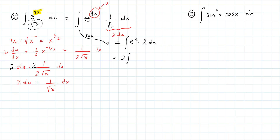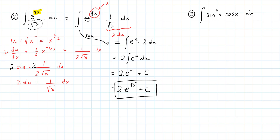Pulling the constant 2 out of the integral: 2 times the integral of e^u du. Now I have it all in terms of u — it's a basic integral, just the integral of an exponential. This becomes 2e^u + C. The last step is to back-substitute: this is 2e^√x + C. We could take the derivative using the chain rule to verify we get back to the original integrand.